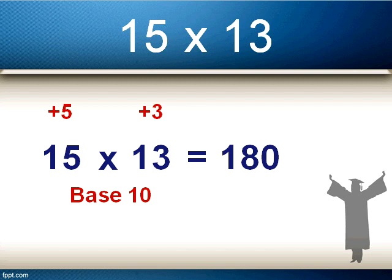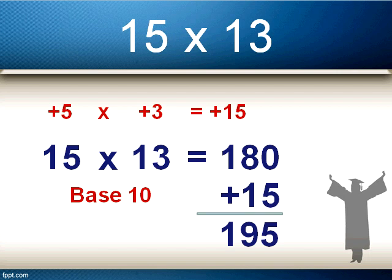The second step, having got that first number, is to multiply those two top numbers — the plus 5 and the plus 3 — together. So we have plus 5 times plus 3, which is equal to plus 15. A plus times a plus is a plus. We then add that number to the one we got from step 1: 180 plus 15, which is equal to 195.